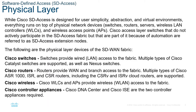The physical layer of SD-Access includes Cisco switches, Cisco routers, Cisco wireless, and Cisco controller appliances — the DNA Center and Cisco ISE — which are the two controller appliances required for SD-Access implementation. For Cisco wireless, Cisco wireless LAN controllers and access points provide wireless access to the fabric. Routers provide WAN and branch access to the fabric; multiple types including Cisco ASR-1000, ISR, CSR, CSR-V, and ISR-V cloud routers are supported.